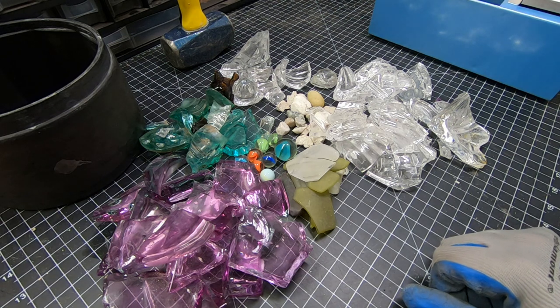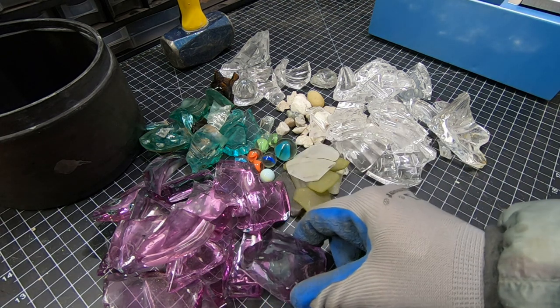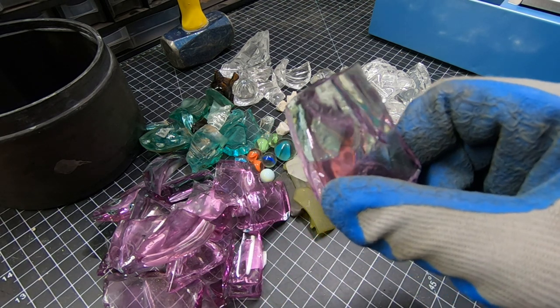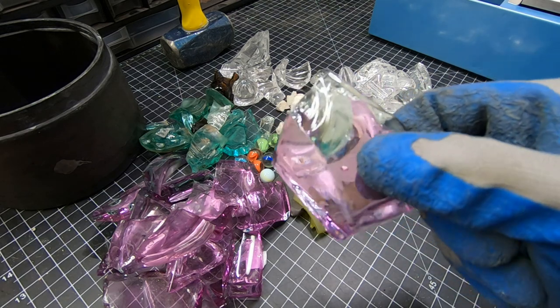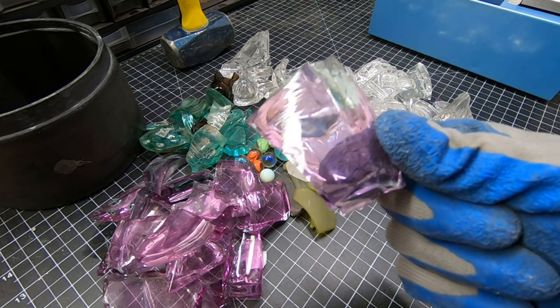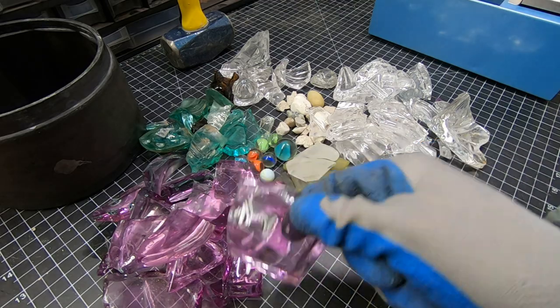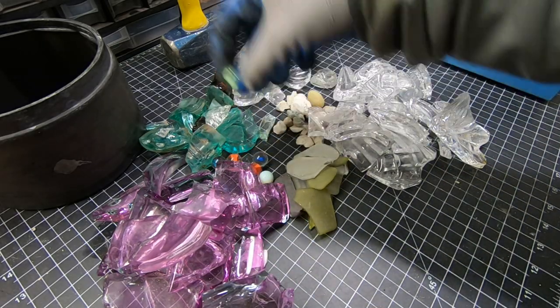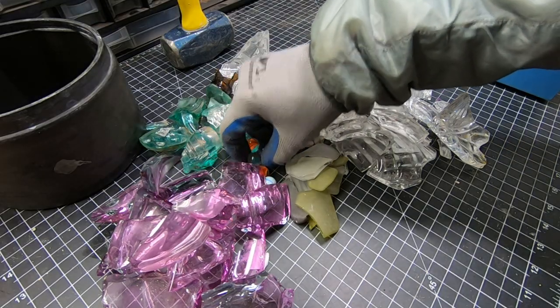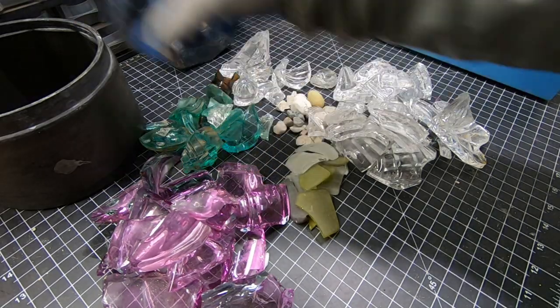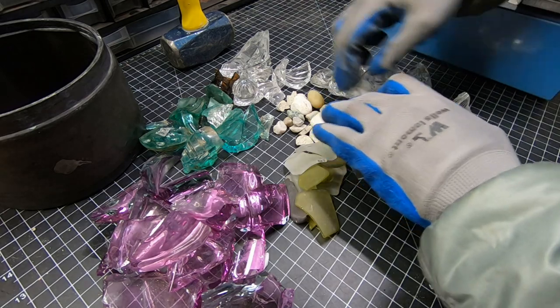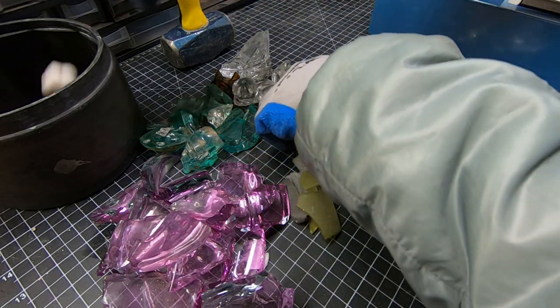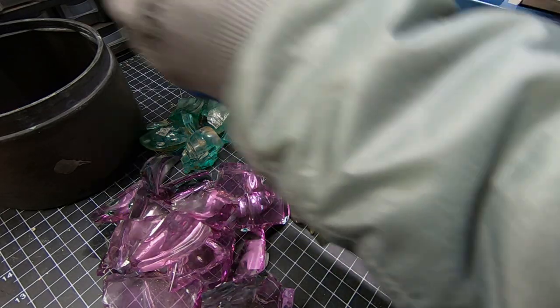So here's what we have. This piece here that I thought was purple is actually clear, and that's just a little purple coating on there. So we'll be kind of picking and choosing here. Definitely all the marbles are going in. All of these rocks are going in, help break up the tumble.